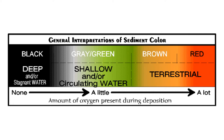Red sedimentary rocks come from environments with lots of oxygen, such as rivers and shallow marine environments. Green rocks, on the other hand, are presumed to come from environments with low concentrations of oxygen, such as deep marine settings. And black rocks generally originate in environments where there is no oxygen present to contribute to the decay and breakdown of the organic matter that gives them their color. Of course, this is just a generalization — color is very misleading and is one of the most difficult things to interpret about a sedimentary rock.